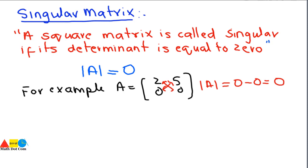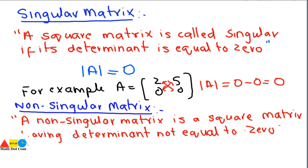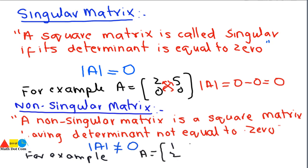A non-singular matrix is defined as a square matrix whose determinant is not equal to 0. For example, A = [[1, 2], [5, 6]]. Finding its determinant: 1×6 minus 5×2 = 6 minus 10 = -4. Since -4 is not equal to 0, it is called a non-singular matrix.